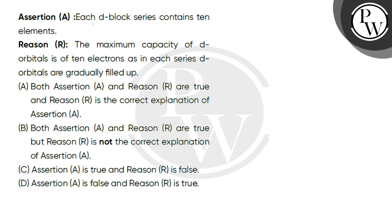The assertion says that each D-block series contains 10 elements. This is a true statement. The reason is that the maximum capacity of D-orbitals is 10 electrons, as in each D-series D-blocks are gradually filled up. This is true.